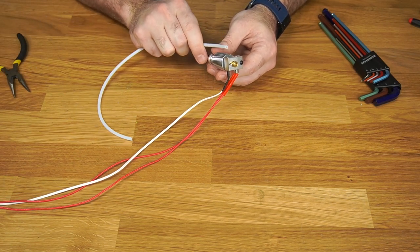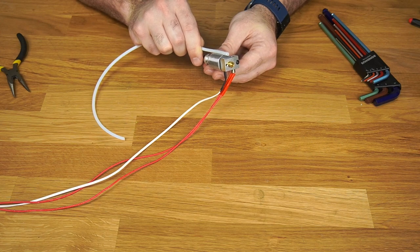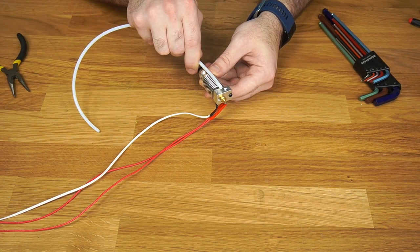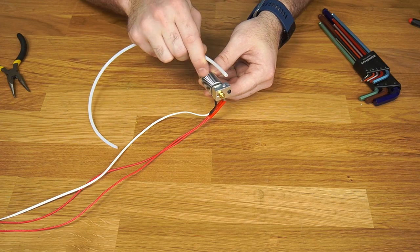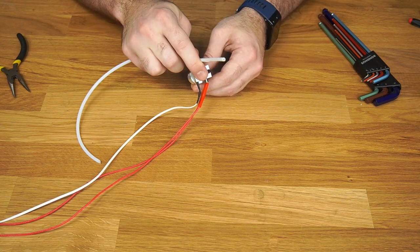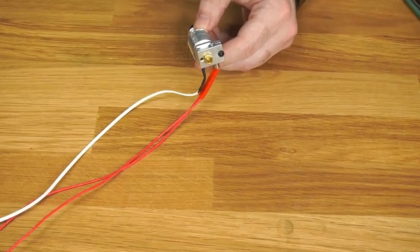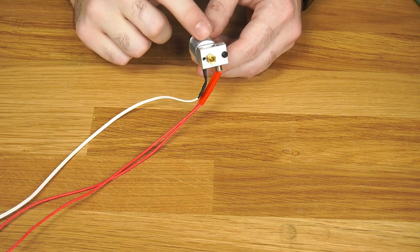So what that means is that the Teflon tube, the PTFE tube, is going to have to go all the way down through the heat sink, all the way into the heater block, and it touches the very tip of the nozzle. So it rides inside the heat brake.